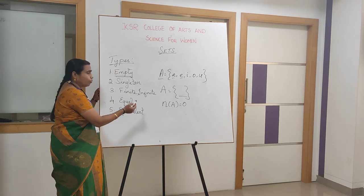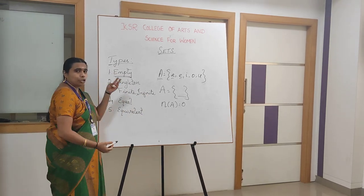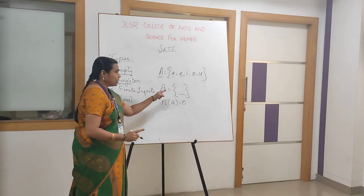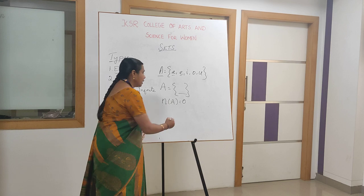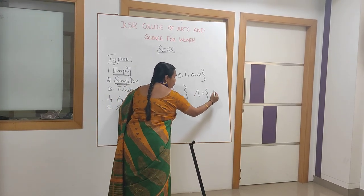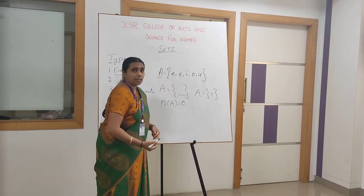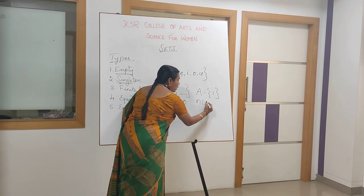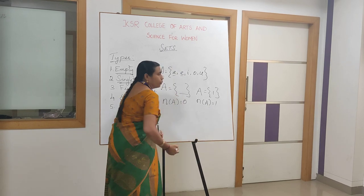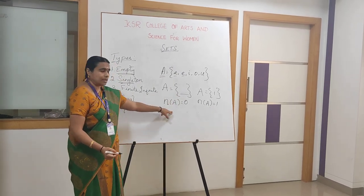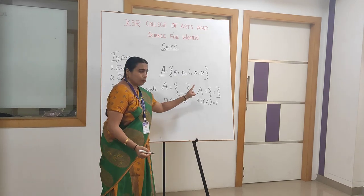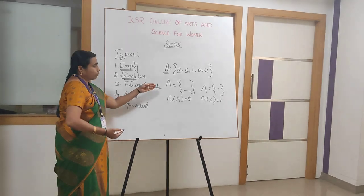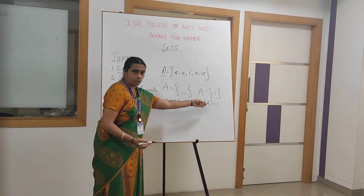To represent the same thing: singleton set. A singleton set has only one element, that is 1. Set bracket with only one element — A is nothing but {1}. That's why we say set bracket has one element and N of A is nothing but 1. So null set or empty set has 0 elements, singleton set has 1 element.